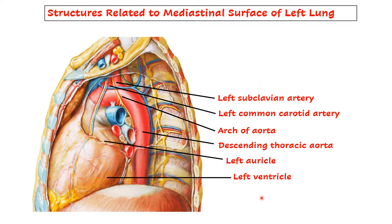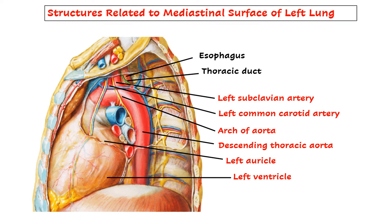Now what is left? Two tubes and nerves. The two tubes are the esophagus and the trachea, which is hidden here. Before the nerves, one more important structure comes in relation: the thoracic duct, because the thoracic duct changes its direction from the right side to the left side at the level of T4-T5 vertebra, at the intervertebral disc between T4 and T5. It crosses towards the left side and runs along the left of the esophagus. So the thoracic duct will also come in relation.